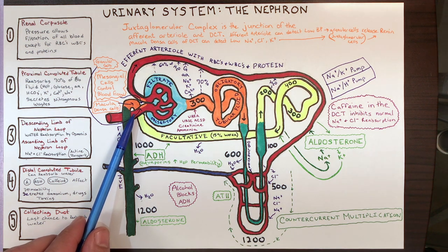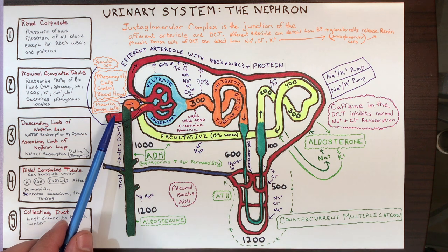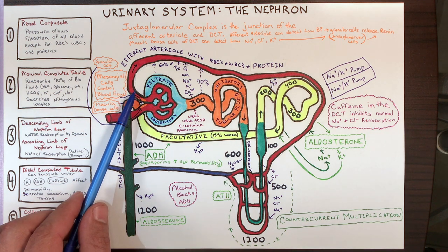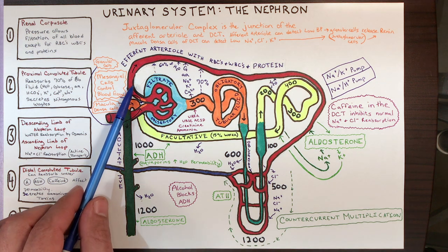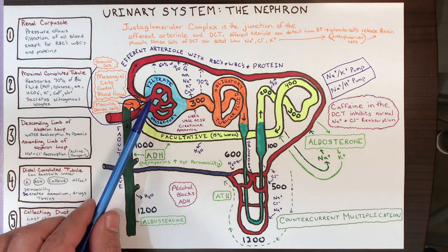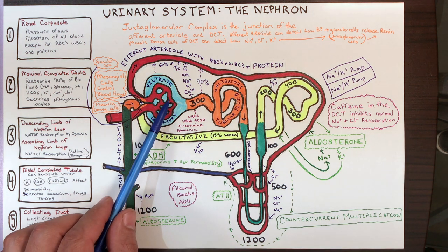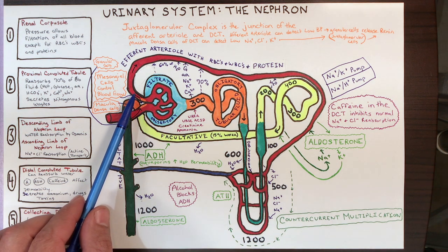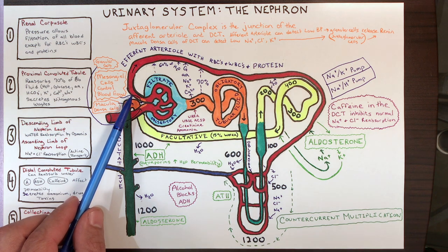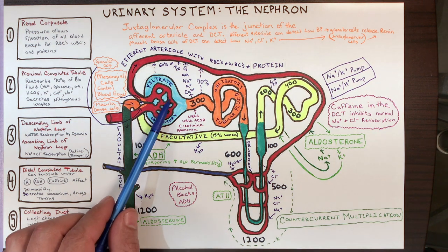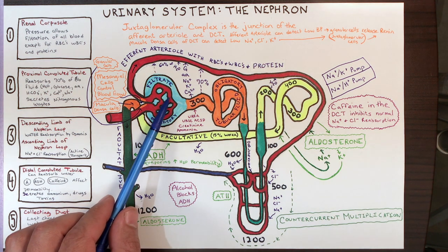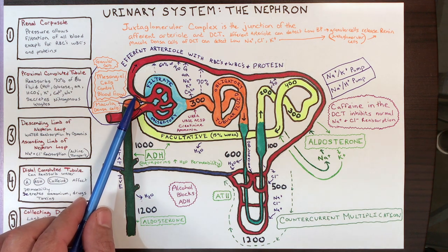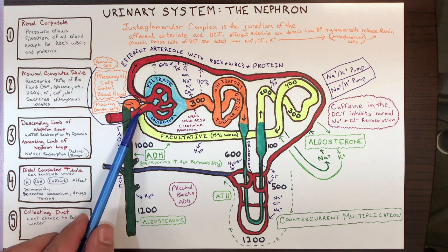Notice the difference in diameter between the afferent arteriole compared to the efferent arteriole — the afferent has a larger diameter than the efferent. This is how we create blood pressure in order to move molecules from the glomerulus into the PCT. It's like you're kinking the hose on this side — the blood needs to go somewhere, and therefore it creates pressure to flow in. The efferent side has a smaller diameter than the afferent side.